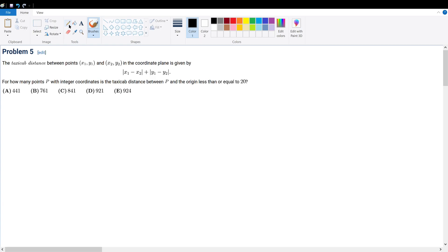Problem 5. The taxicab distance between points x1, y1, and x2, y2 in the coordinate plane is given by the following system. For how many points P with integer coordinates is the taxicab distance between P and the origin less than or equal to 20?